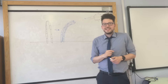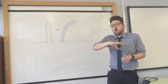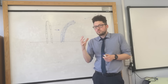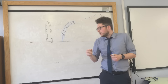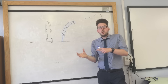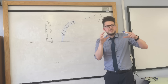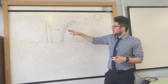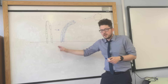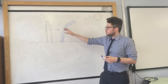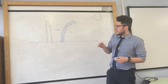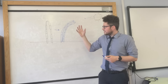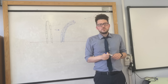A key point is that the shoots behave in the opposite way to the roots. The roots will always respond opposite to the shoot — so while the roots grow away from light, the shoots grow towards it. And that is plant hormones and tropisms.